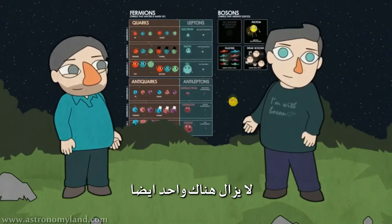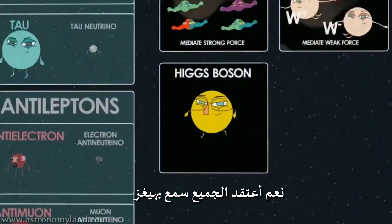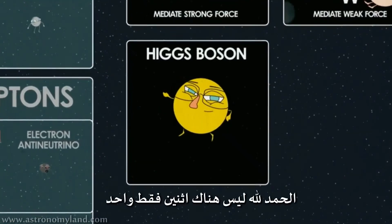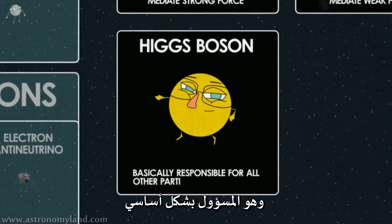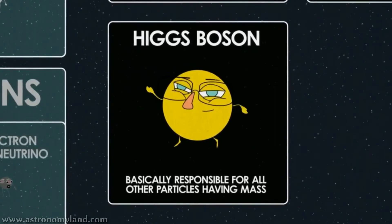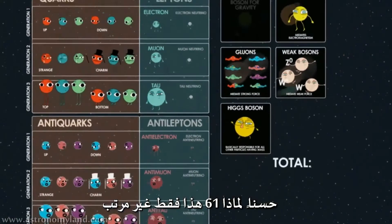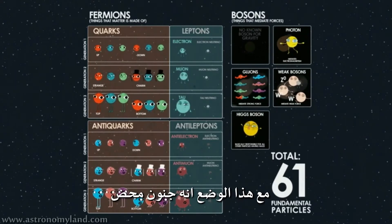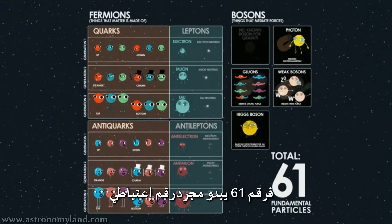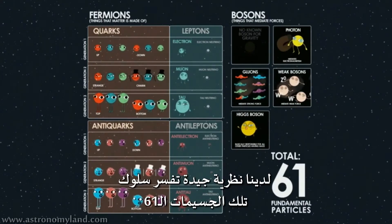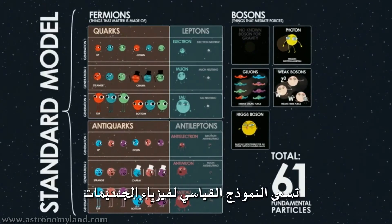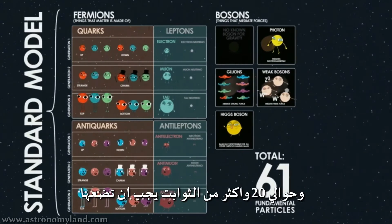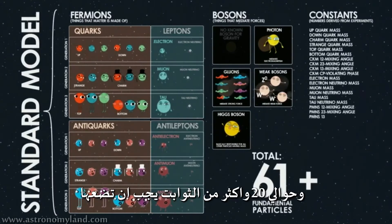We're done now? No, there's still one more - the Higgs boson. The Higgs boson was the last one to be discovered. It is its own antipartner, thankfully, so there's just the one. It's basically responsible for all the other particles having mass. So why 61? That's just untidy. This cannot be right. 61 just seems completely arbitrary. We have a good theory that explains how these 61 particles behave - it's called the standard model of particle physics. But the standard model is still pretty messy: it has 61 particles and something like 20-something numbers you just have to get from experiment.